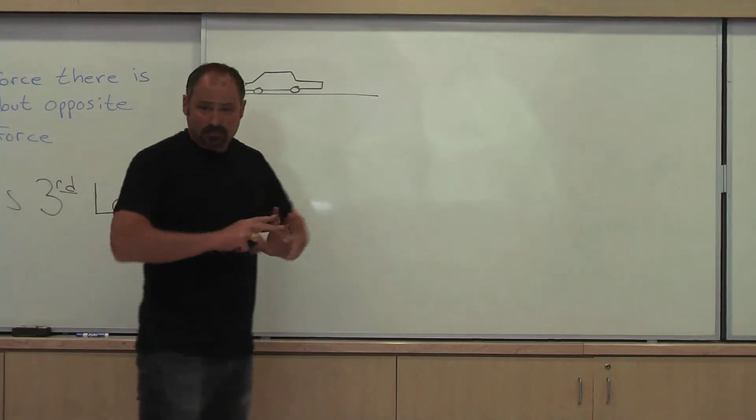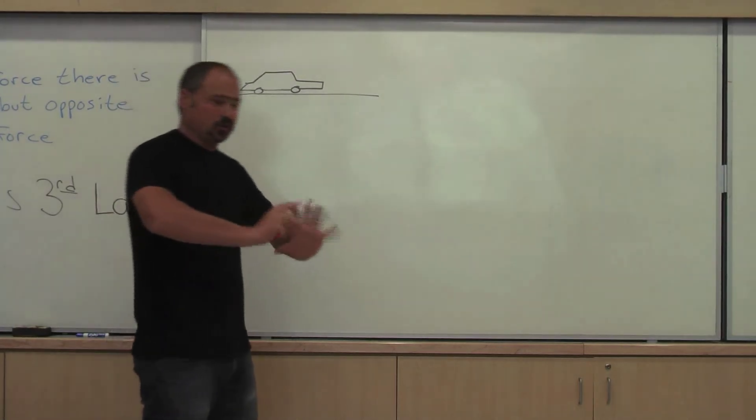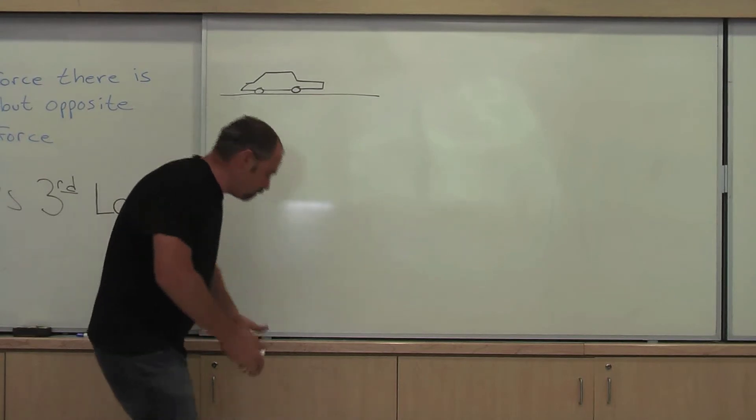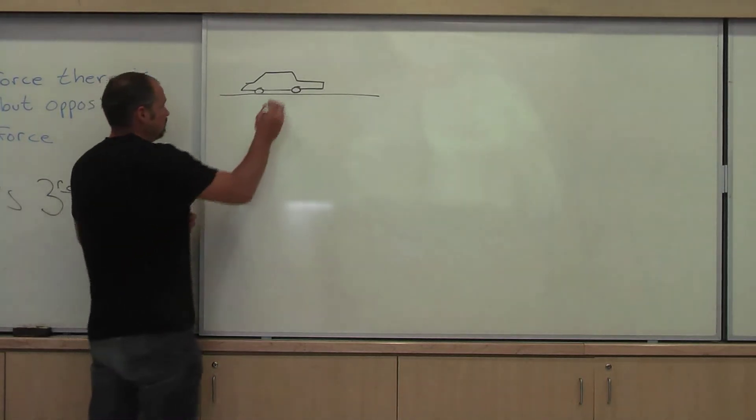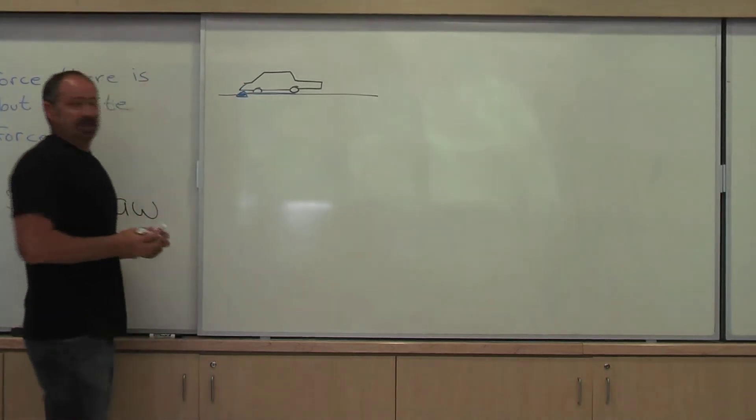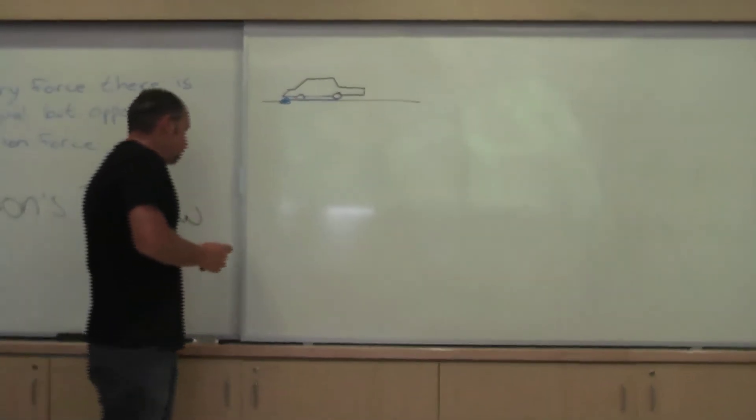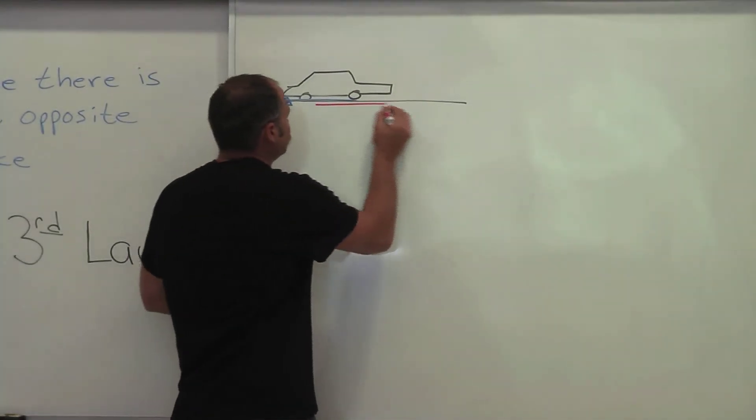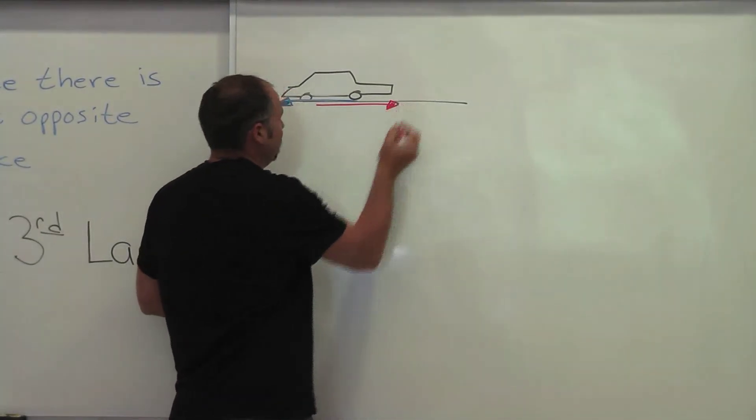Well, the engine turns the axle, which turns the wheels. The wheels are gripping the road, so the wheels push the road backwards. So the wheels are pushing on the ground in that direction, and the reaction force is for the ground to push on the wheels this way.